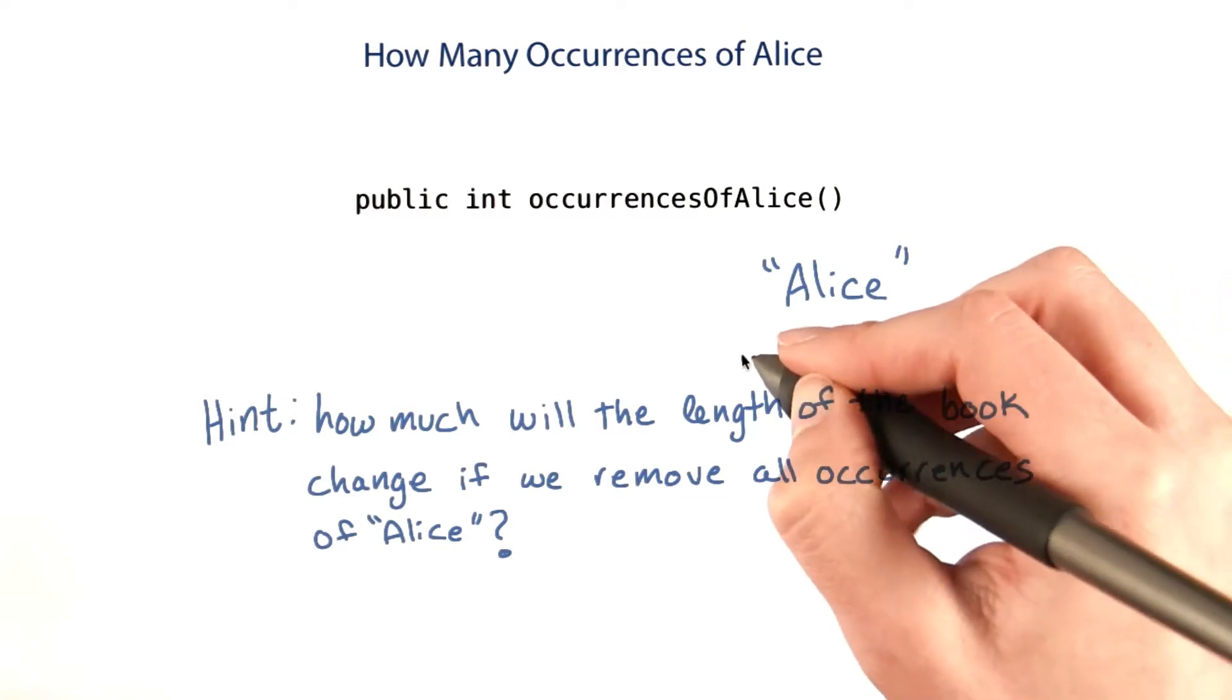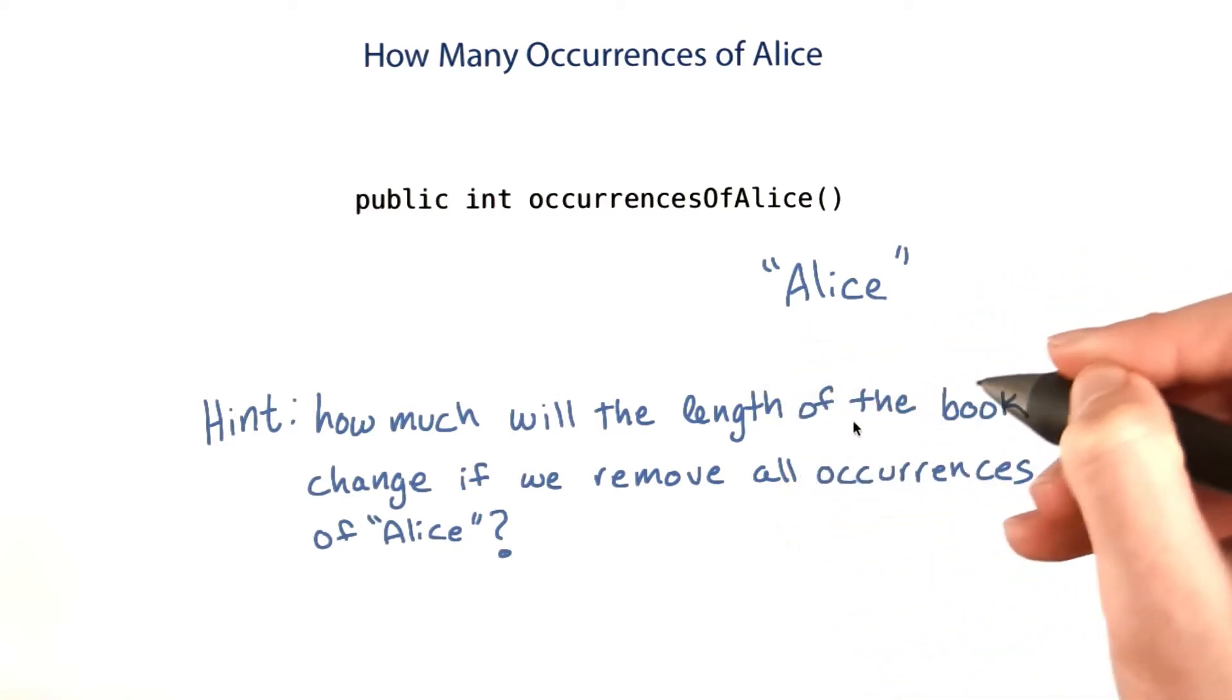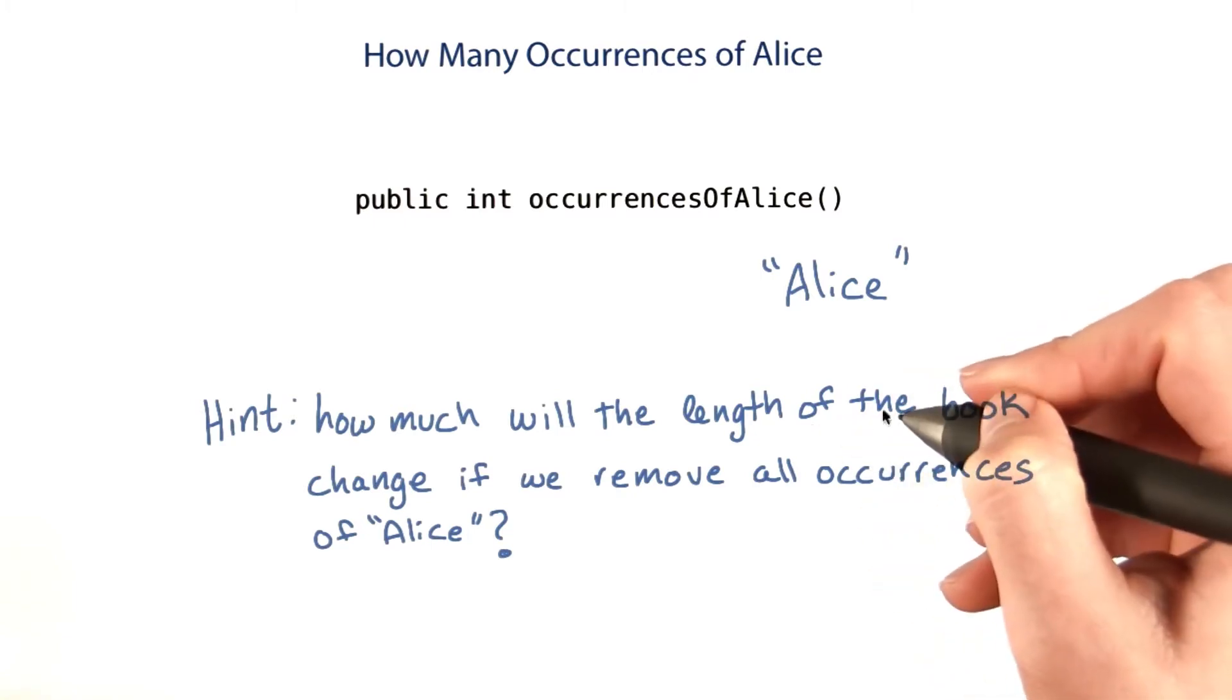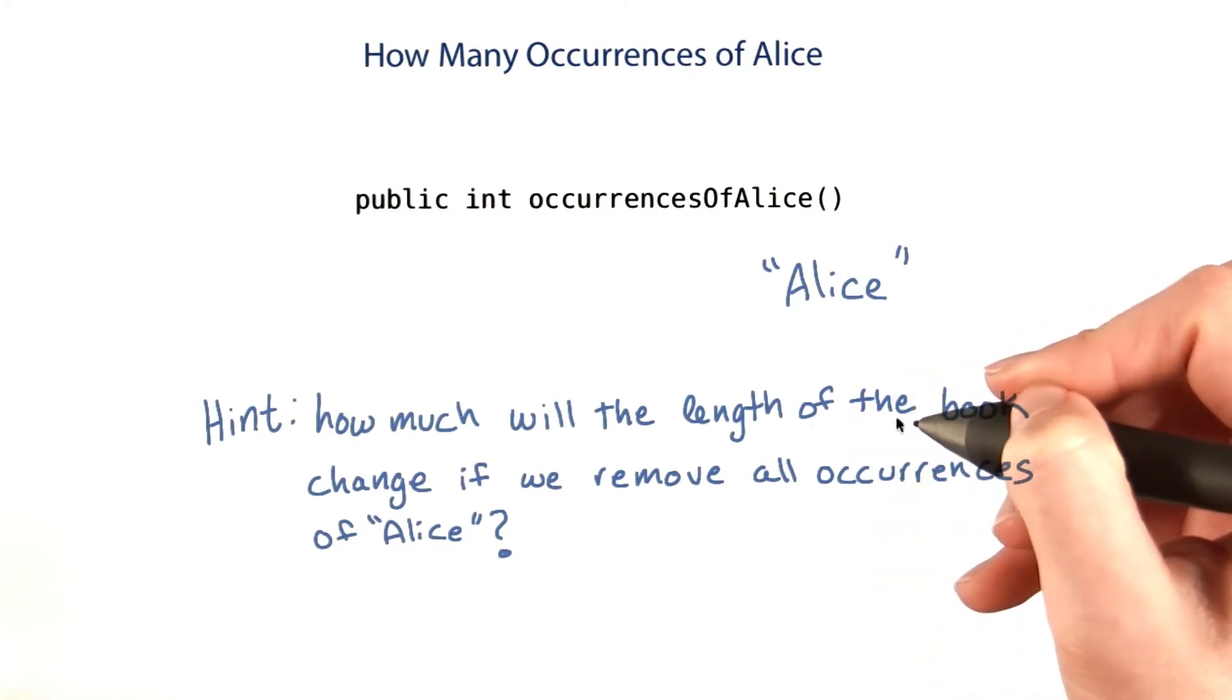So if we calculate the length of the book with Alice and the length of the book without Alice, and then take the difference, we can divide the difference by 5 and get the number of occurrences.